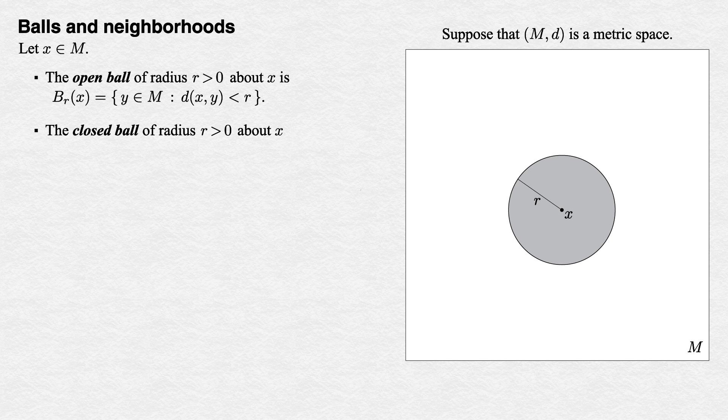We denote this closed ball by B̄_r(x). That is the same notation with a bar on the B, which you can think of as representing the boundary we now include. The only difference in a symbolic definition is that we use a less than or equal to sign to include the points at distance exactly r from x.